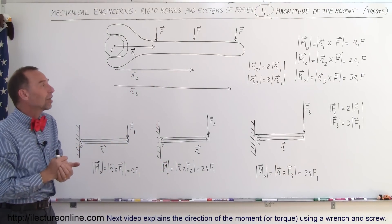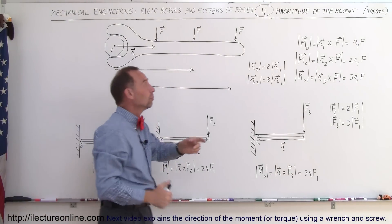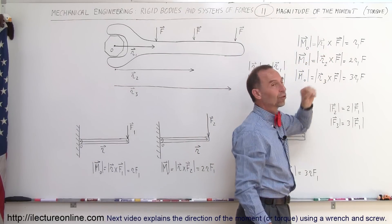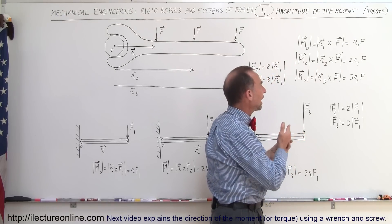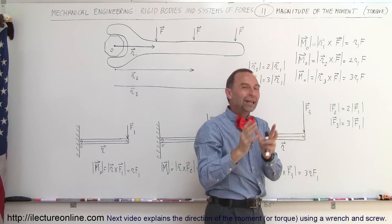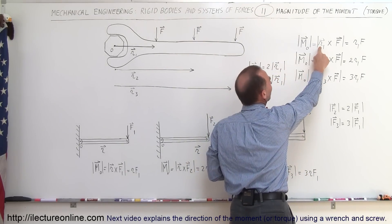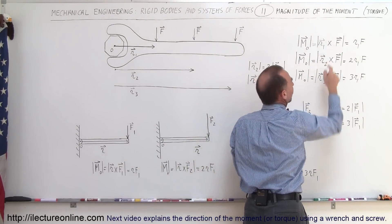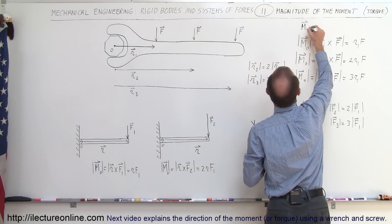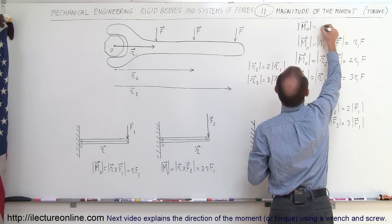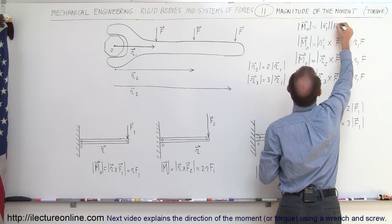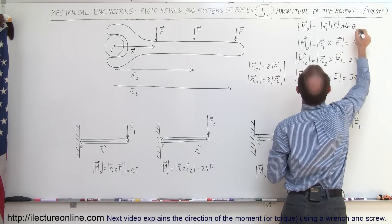So what is the magnitude of the moment in each case? Notice the definition for the moment: it's equal to the vector product of the position vector times the force applied. The magnitude of the moment is equal to the magnitude of the position vector times the magnitude of the force times the sine of the angle between them.